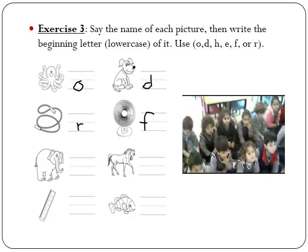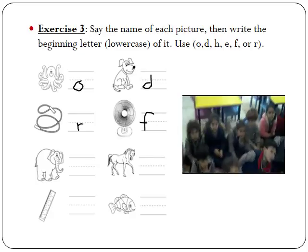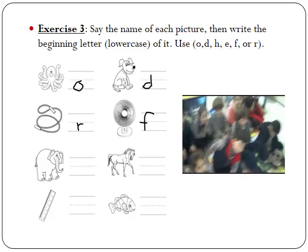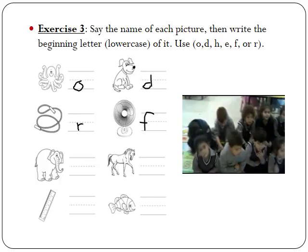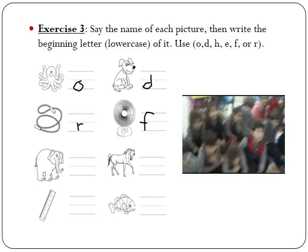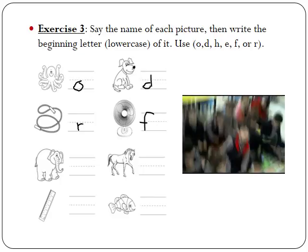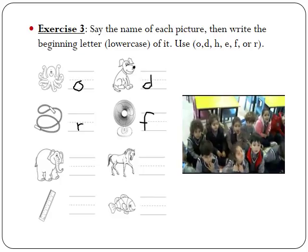Can you make the sound it begins with? Let's move to this animal. Elephant. This is an elephant. What sound does it begin with? E, E, E. What letter should I write? E.